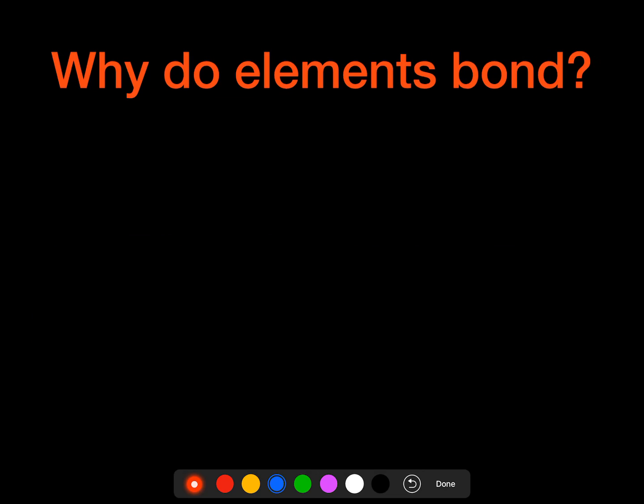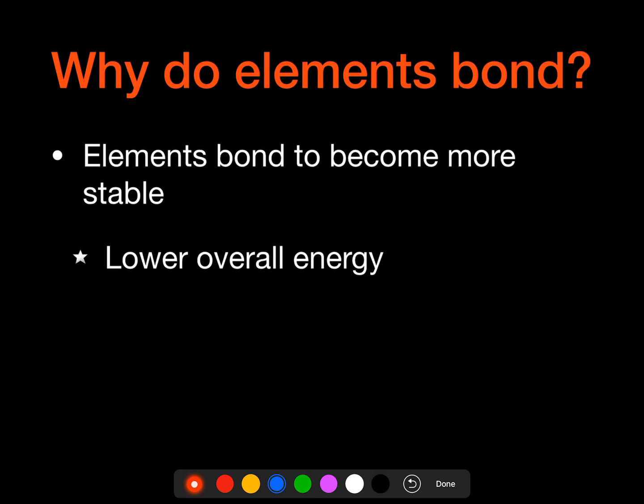So why do elements bond? Elements bond to become more stable, and in the process of that they're trying to lower their overall energetics. And when they do that, their electron configuration becomes that of a noble gas, and so that's kind of the idea behind this.